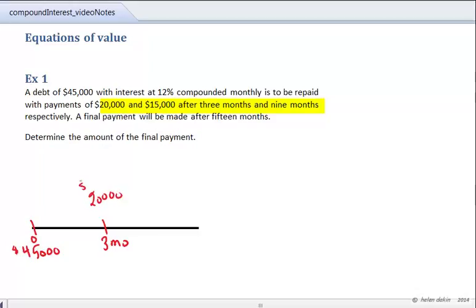And another payment of $15,000 at 9 months. And extending our time diagram down to 15 months, we're going to be making our final payment at 15 months of X dollars.